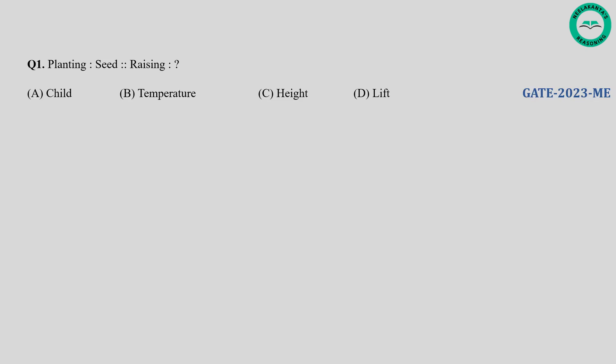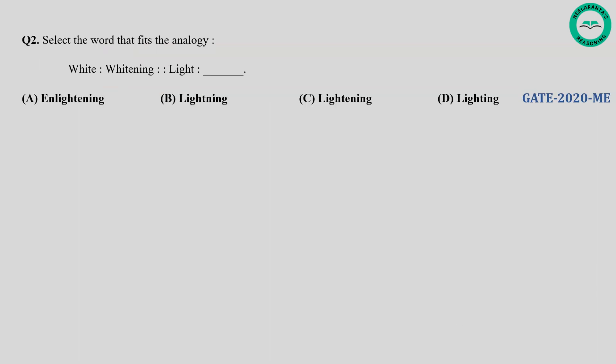Question number one: Planting, Seed — Rising, blank. The relationship is that planting involves placing a seed in the ground to grow a plant. So planting is the action performed on a seed to make it grow into a plant. Similarly, rising is the action performed on a child to help them grow and develop. So the answer is option A.